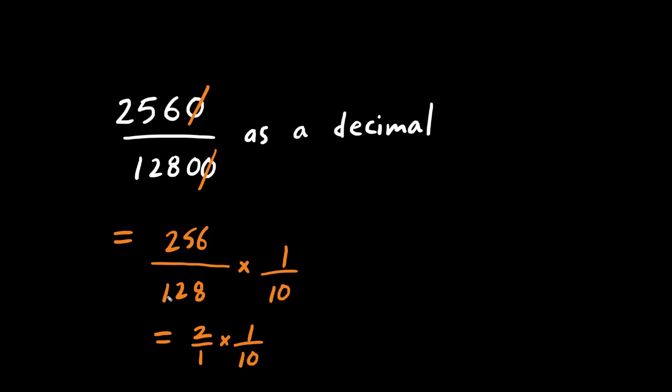Another technique is to continually divide by 2, the numerator and denominator. So now we have 2 over 1 multiplied by 1 over 10, multiplying across. We have 2 over 10, which can be reduced to 1 over 5 if you divide top and bottom by 2.